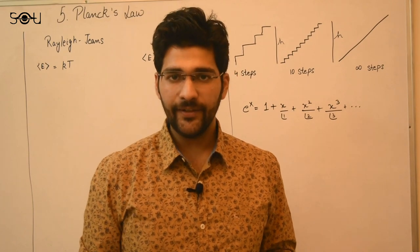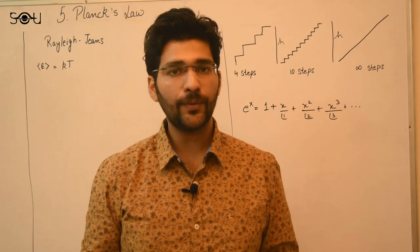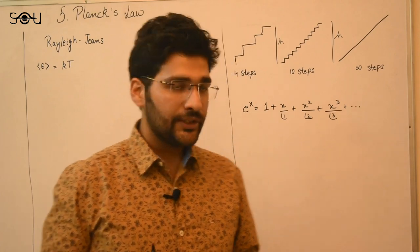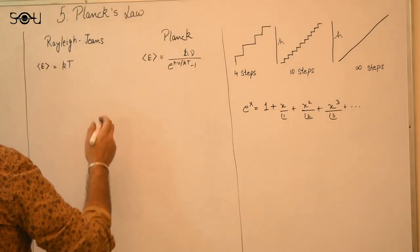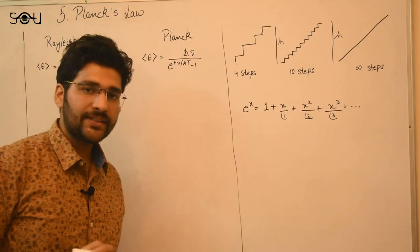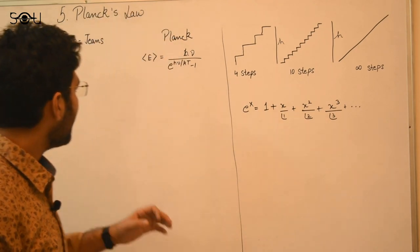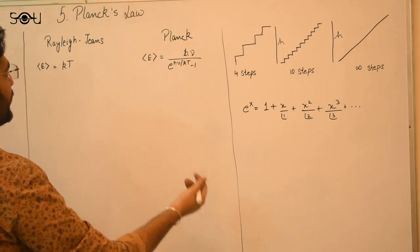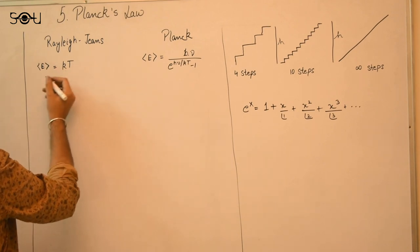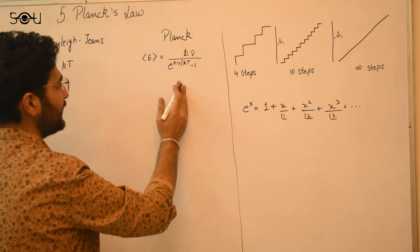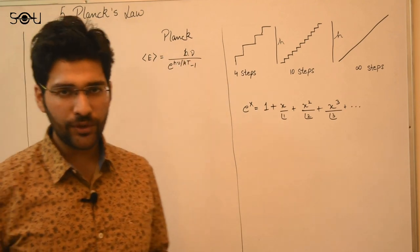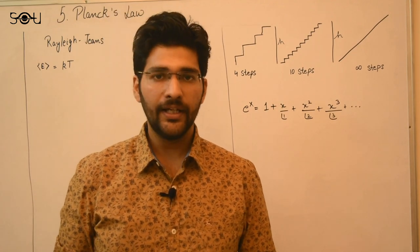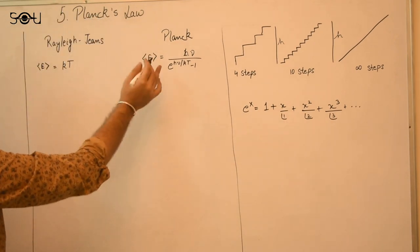Now our last task is to derive Rayleigh-Jeans law and Wien's distribution law from Planck's radiation law. The only difference between Rayleigh-Jeans law and Planck's law was how they treated the average energy. Rayleigh-Jeans said the average energy is kT, while Planck gave a different expression. Both used the same mathematics to find the number of modes. We can easily derive Rayleigh-Jeans law from Planck's law.